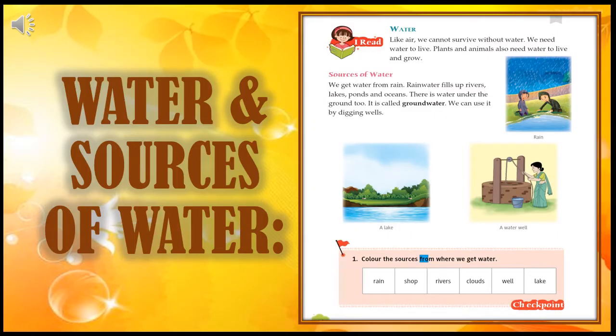Let's read. Water. We need water to live. Plants and animals also need water to live and grow. Sources of water: We get water from rain. Rain water fills up rivers, lakes, ponds, and oceans. There is water under the ground too. It is called ground water. We can use it by digging wells.